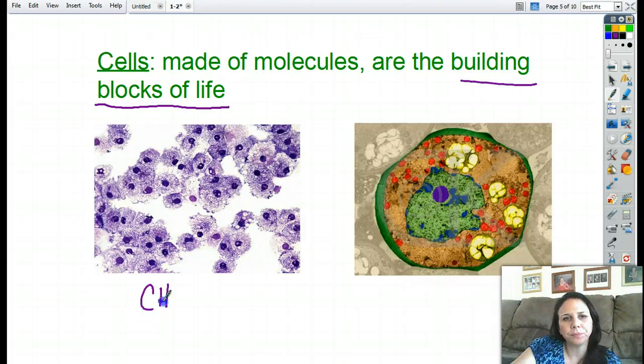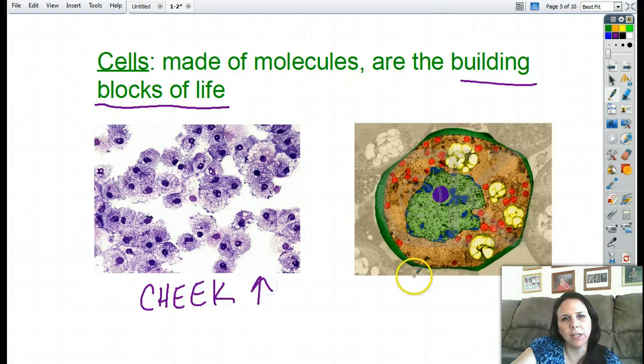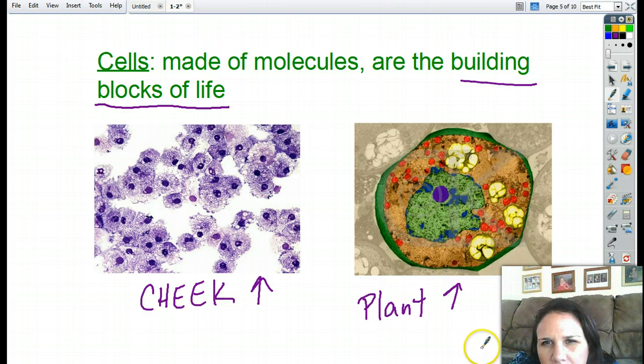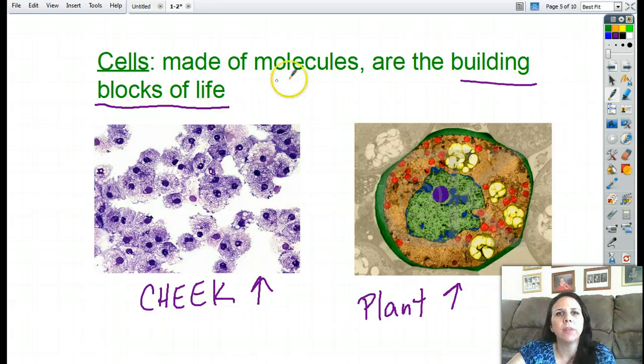These, by the way, are cheek cells. This is what you guys can find inside of your cheeks slushing around there. And this one right there, that is a plant cell. I believe so. Maybe. I can't tell now. I'm just going off of the green, but I don't see any chloroplasts in there. So we got cells made up of all sorts of molecules building blocks of life.